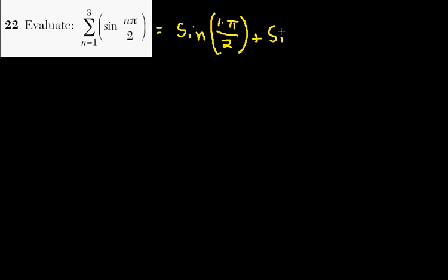Plus sine, and then n is going to equal 2, so it's going to be 2 pi over 2, and then let n equal 3, sine 3 pi over 2.